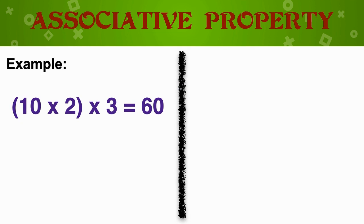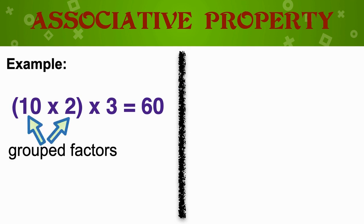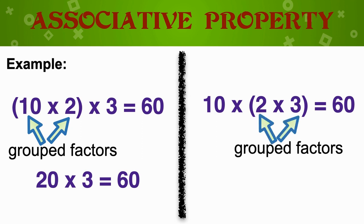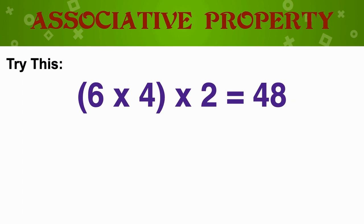If we group 10 times 2 and multiply that by 3, we get the product of 60. (10 times 2) is 20, times 3 gives us 60. If we take that same example but group different factors, we should get the same product — that's what the associative property tells us. So if we group now 2 times 3, that gives us 6, and multiply that by 10, we get 60.